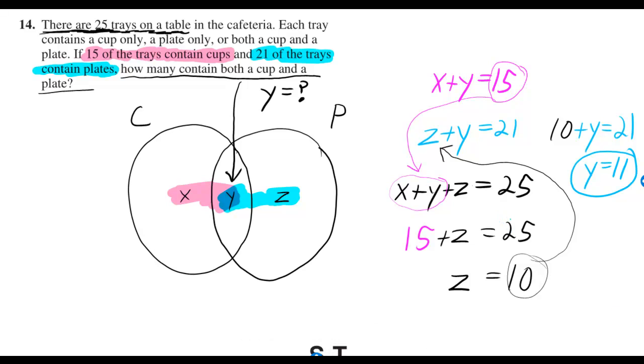So if there's 25 trays that have only plates or cups, if there's 15 that have cups, then there must be 10 that have plates only.